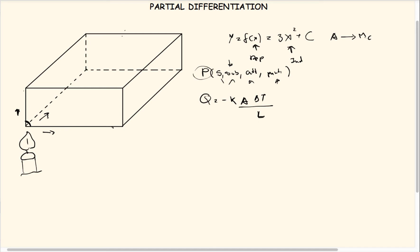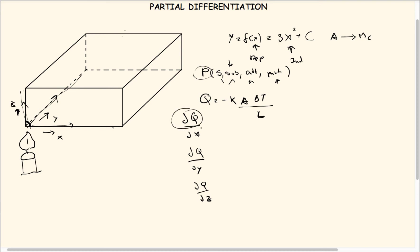If you want to find the overall heat transfer in this rectangular bar, heat is not only flowing in one direction — it flows in three directions: x, y, and z. If you want to know the heat transfer rate only in the x direction, you are not interested in what is going in the y or z direction. So you find the partial derivative of heat with respect to x, and similarly with respect to y and z.